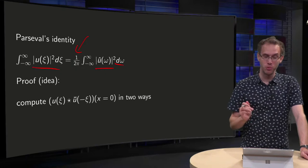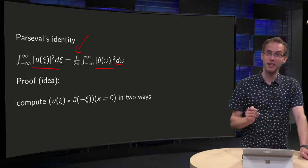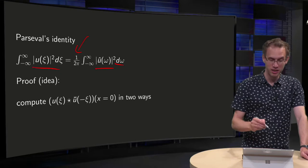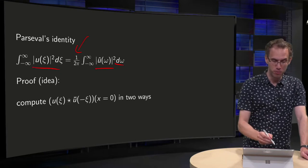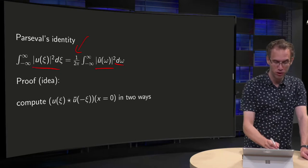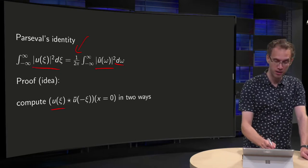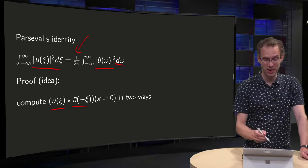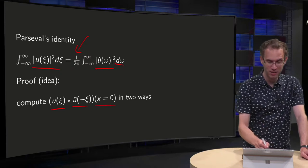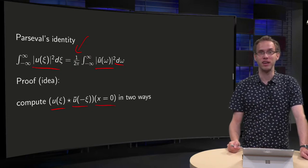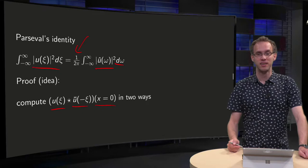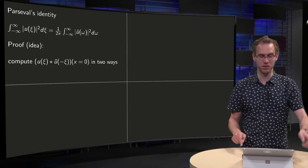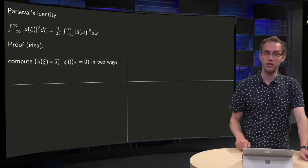Why is that true? What is the idea of the proof? You do a smart trick: you compute the convolution of u(ψ) and ū(−ψ) evaluated at zero in two different ways, and that will exactly yield this equality.